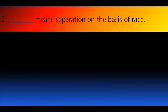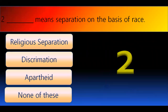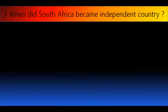Second question: 'Dash' means separation on the basis of race. What kind of separation is there on the national level? The options are religious separation, discrimination, apartheid, or none of these. The right answer is apartheid.